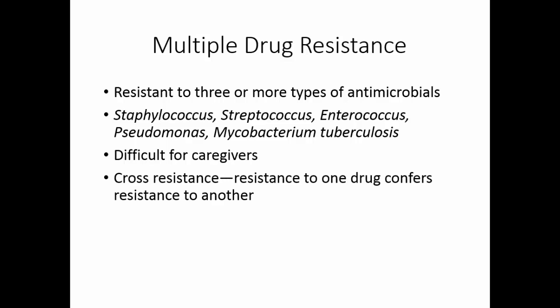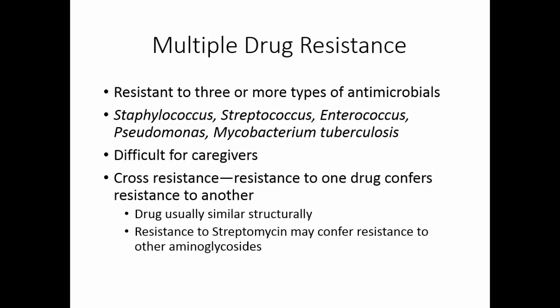Cross resistance occurs when resistance to one drug confers resistance to another drug. Usually the drugs involved are structurally similar. For example, resistance to streptomycin may confer resistance to other aminoglycosides, since streptomycin is in the aminoglycoside family, so all of those drugs would be structurally similar.